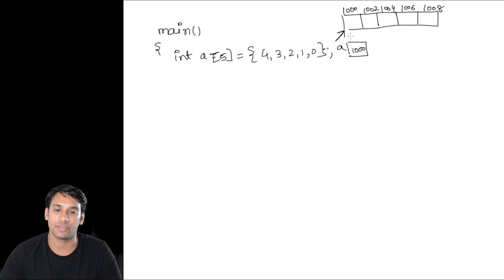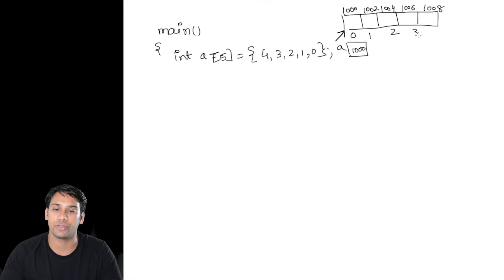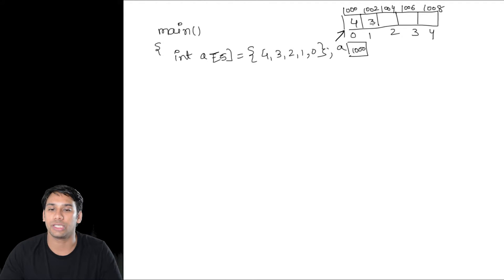So these are the index locations 0, 1, 2, 3, 4, and the values stored are 4, 3, 2, 1, and 0.